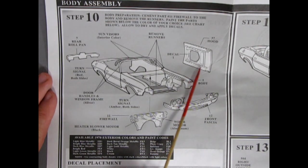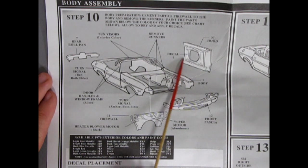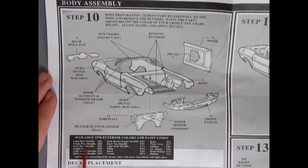And then here we have our hood and there's a decal that goes underneath on the inside. Which is interesting. Available 1970 exterior colors and paint codes.